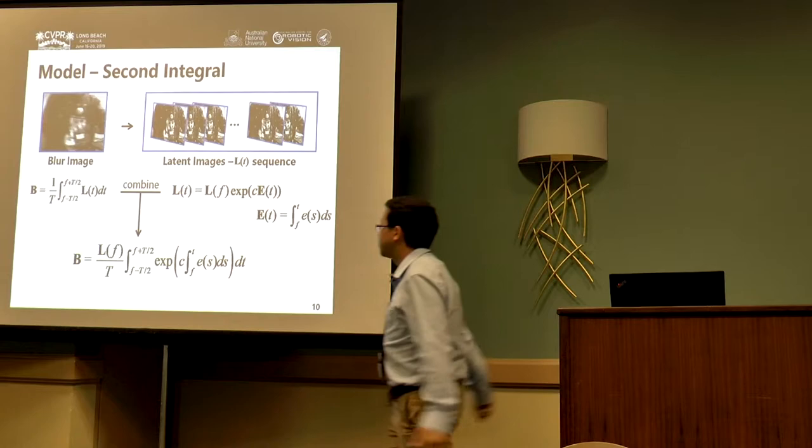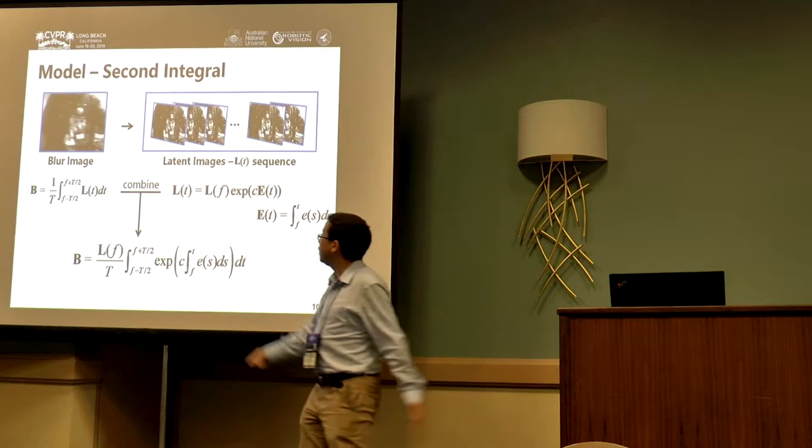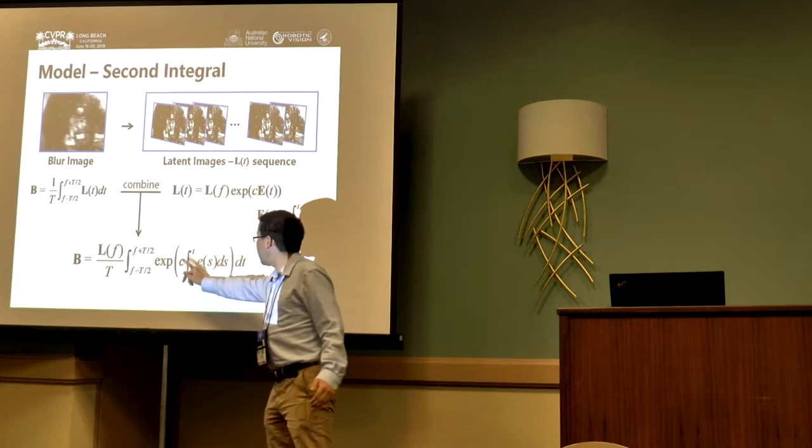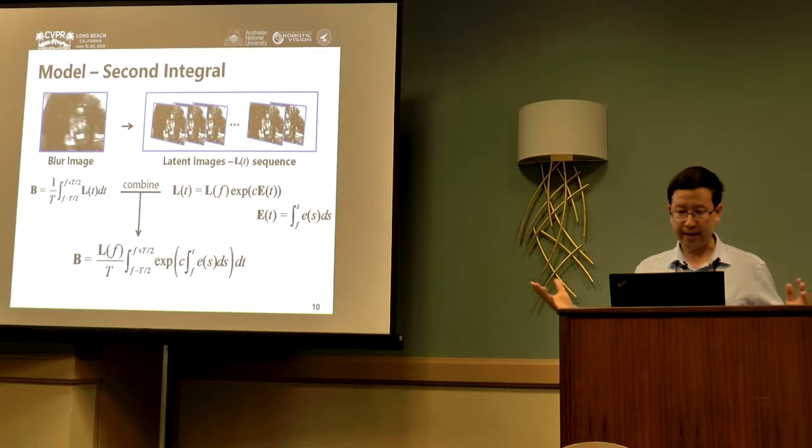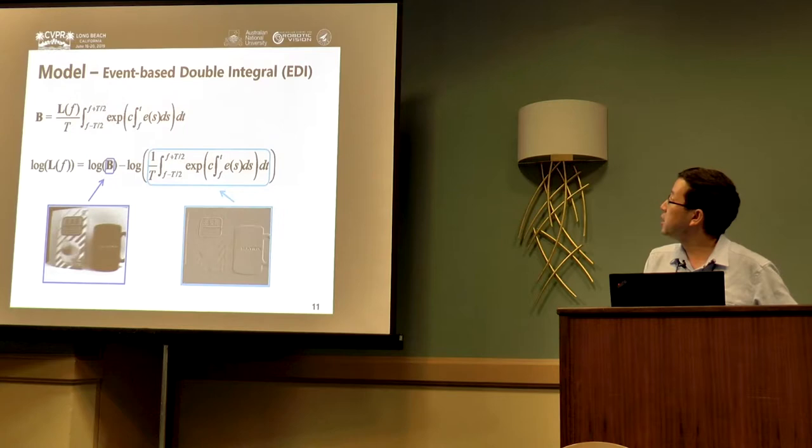Remember, our task is that we want to recover a single high frame rate video from a single frame like this one. We only have B. What we want to achieve is to estimate all the latent things. We also know these things. The only unknown variable is this threshold C. If we can solve the threshold C, we can transform the blurry image B and get the clean latent image.